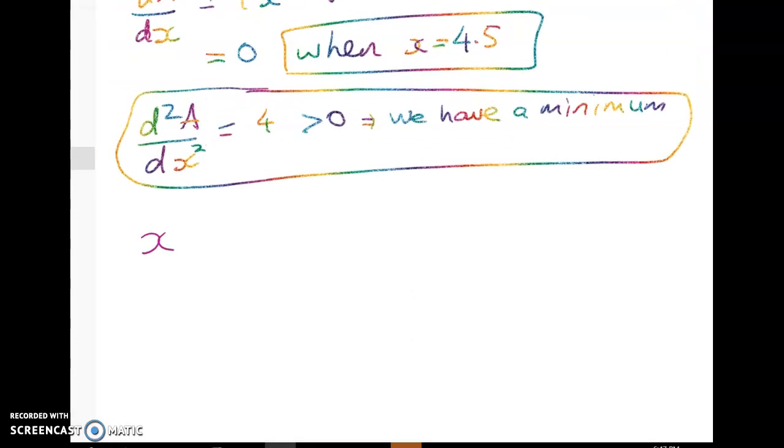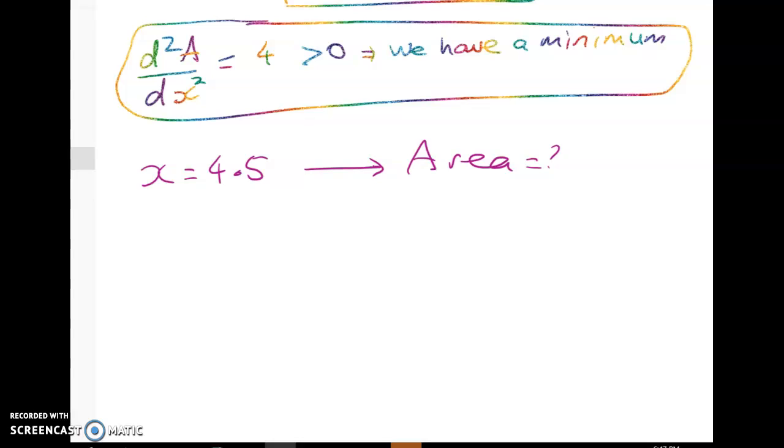But we've got to take x equals 4.5 and we have to substitute it back to get the area. All right so don't forget that or the most you're going to get is merit and that would be a bit of a shame because you've done all that hard work. So A is equal to 2 times 4.5 squared minus 18 times 4.5 plus 80 and that equals 39.5 centimeters squared.